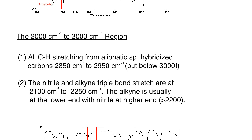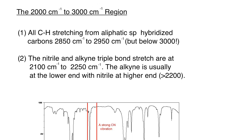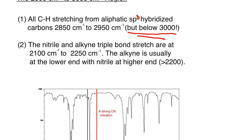That covers the above 3000 region. Moving into the 3000 to 2000 region: the main feature here is all the C-H stretching from aliphatic sp³ hybridized carbons, appearing from around 2800–2850 up to 2950 cm⁻¹. Importantly, this is below 3000 — that boundary is a critical marker for distinguishing sp³ C-H stretches from sp² or sp C-H stretches.